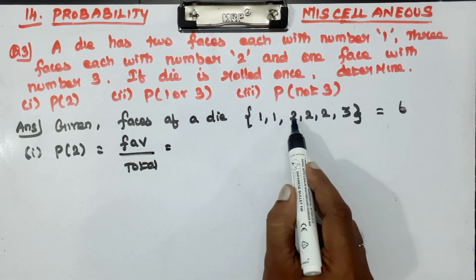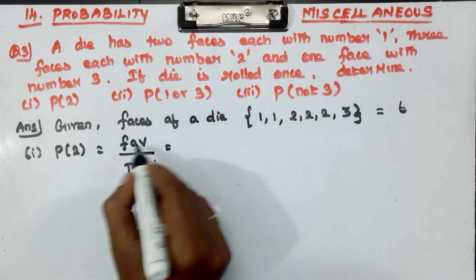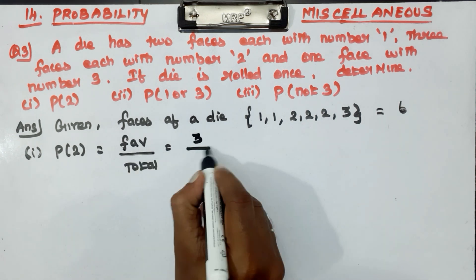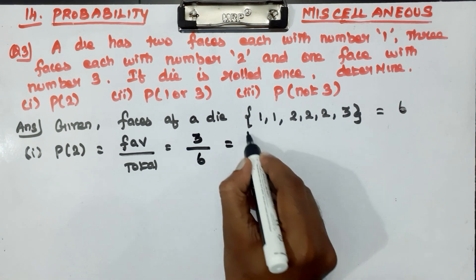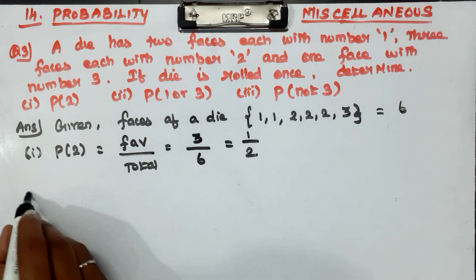Now, how many times do you have 2? 1, 2, 3. Favorable outcome is 3, total outcome is 6. So the answer is 1 by 2.